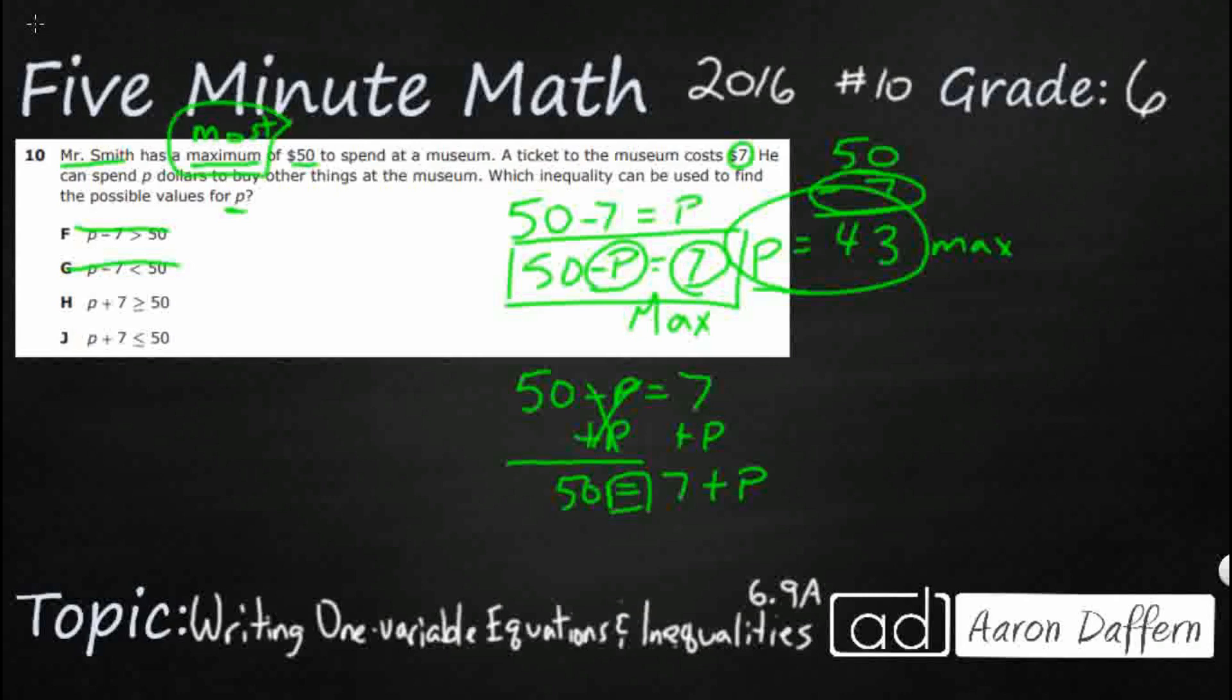That's where this comes back in right here. So the maximum that he is going to spend at the museum is $50. So that means everything else has got to be less than that. So take a look at this right here.